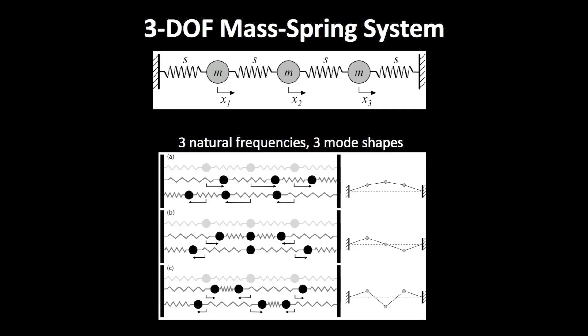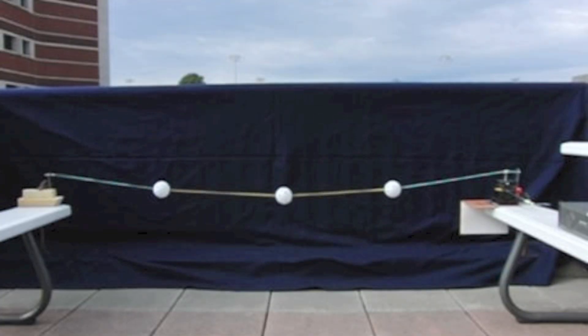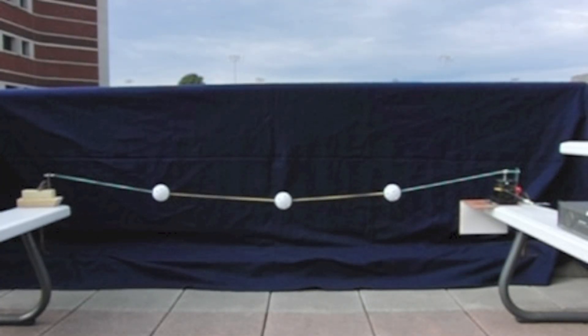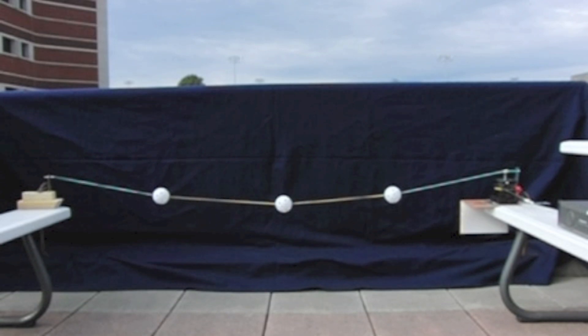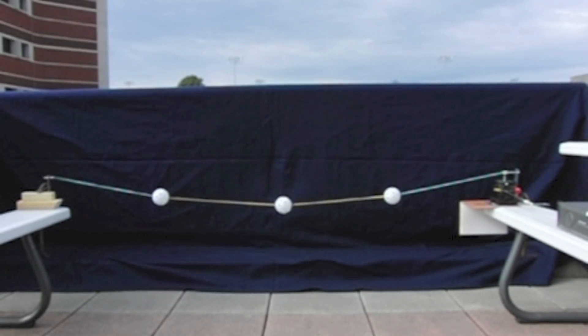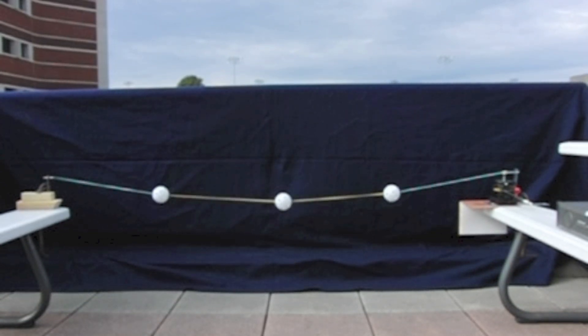A three degree of freedom mass-spring system has three natural frequencies and three mode shapes. In the first mode shape, all three masses move in the same direction at the same time, with the center mass moving slightly farther than the outer two.